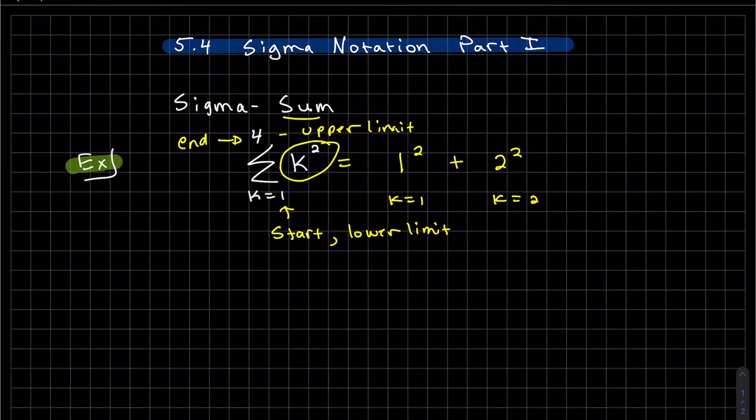You replace 2 with k plus k equals 3, 3 squared and last but not least we end at 4. So we can add that up. I believe the total is 30.